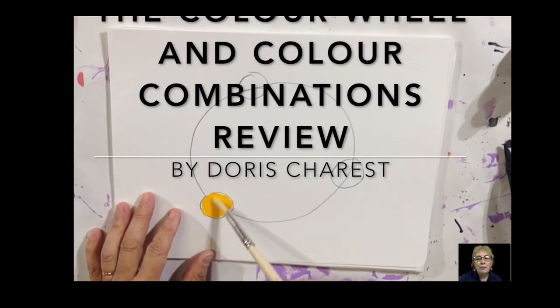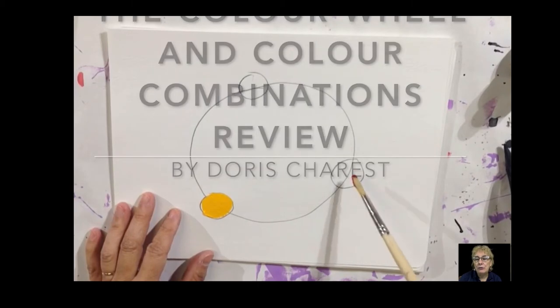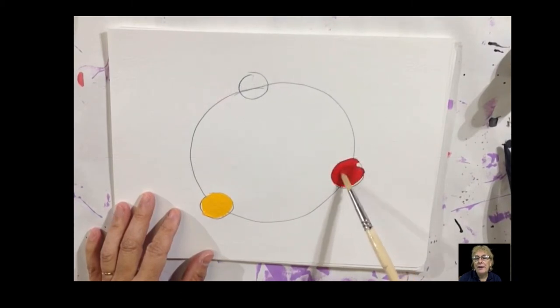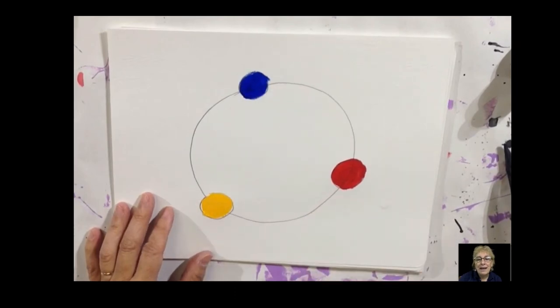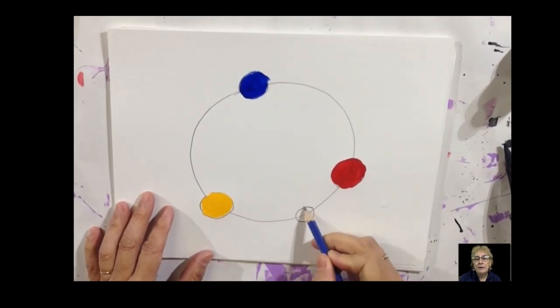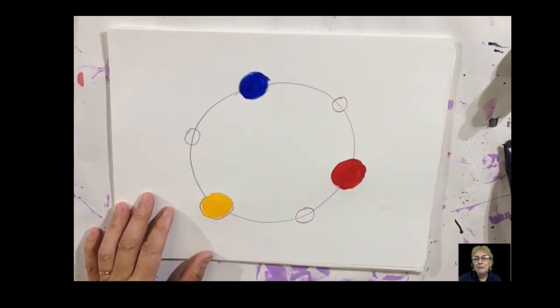You start with the primary colors: yellow, red, and blue, and then you go from there. So here I have yellow, I have red, and now I'm going to add blue. These are called primary colors, and primary colors are very important. They're the basic building blocks of all color mixing.